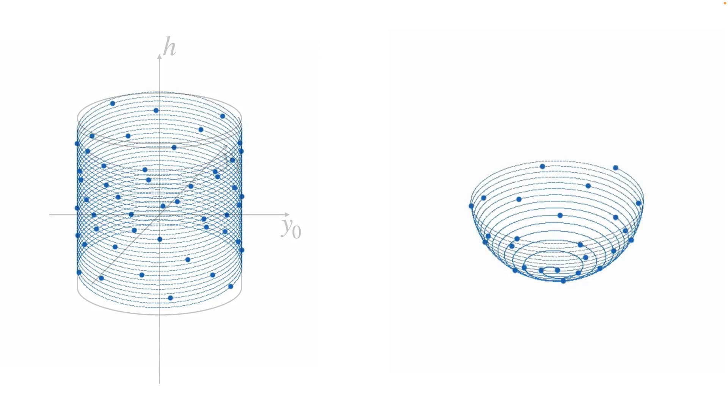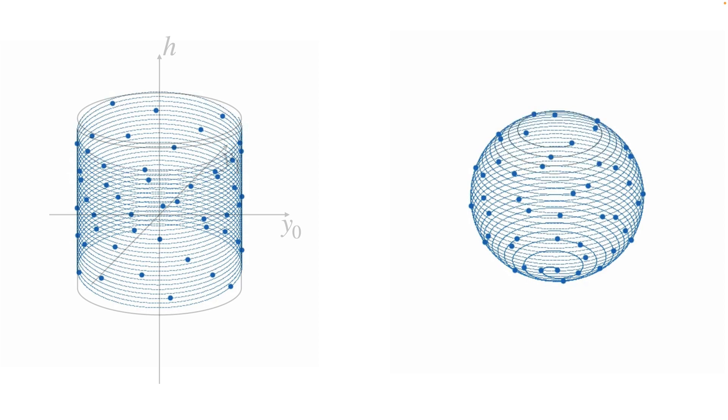I speculate that the good properties of this spiral come from the fact that we used area-preserving mappings in all steps.